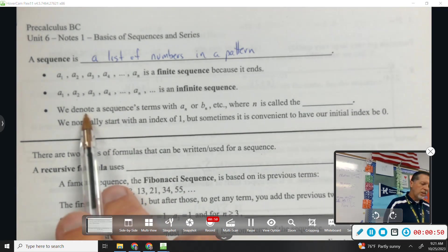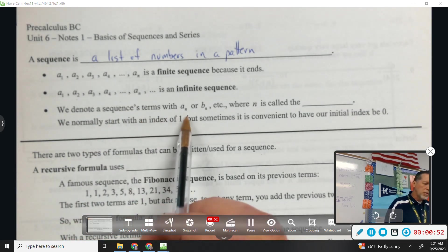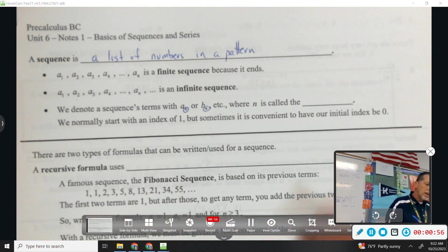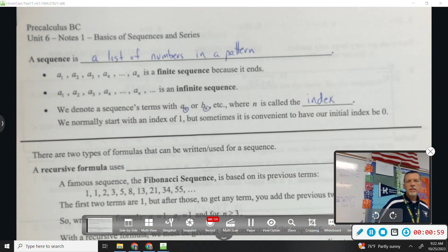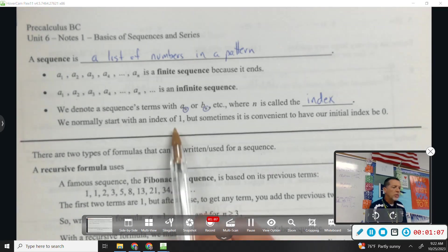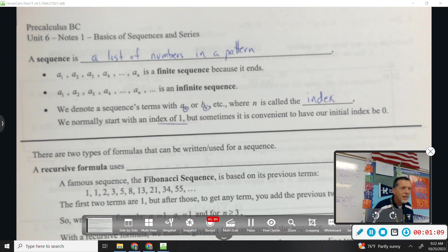Some notation here. We denote a sequence's terms with that little subscript in, and we call that the index. Sort of the counter of the terms. What term are we on? We normally start with an index of 1. That way the first term is n equals 1, the second term is n equals 2, and the third term is n equals 3.